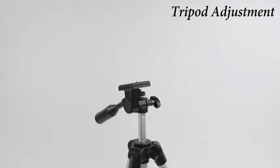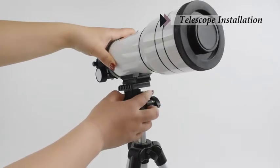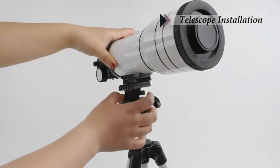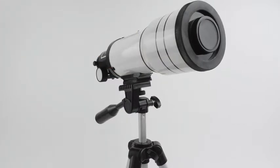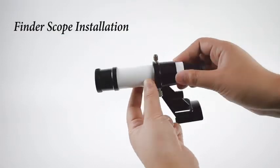Place the telescope tube on the tripod and rotate the knob to fix it. Remove the thumb screws from the telescope main tube. Place the finder scope bracket onto the telescope tube and fix it by screw.